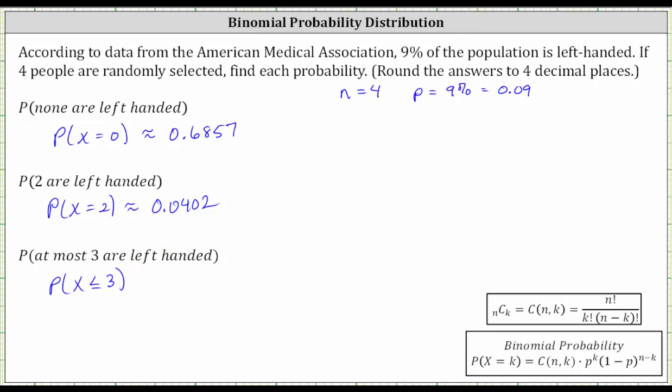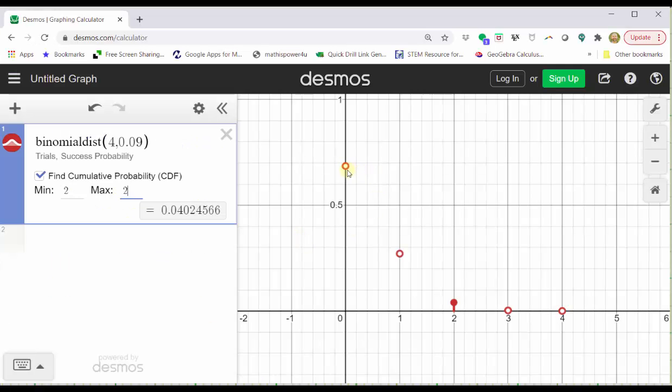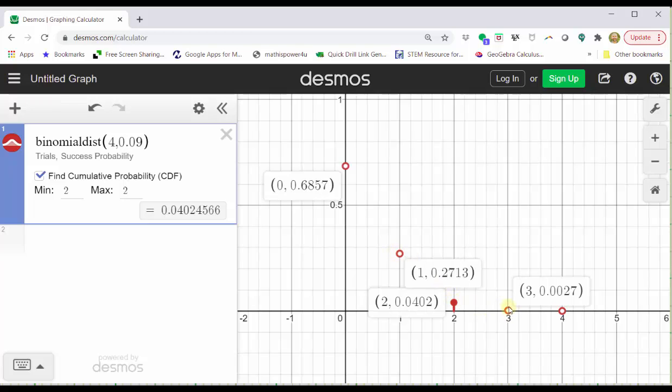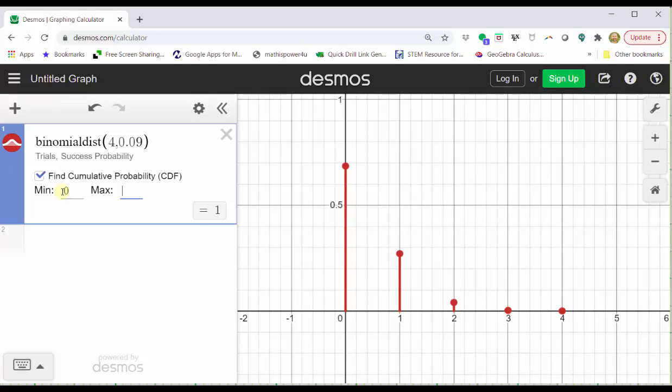Going back to Desmos, we could click on the points where X equals zero, one, two, and three, and then sum the probabilities, or we can simply go back to cell one, change the minimum value to zero, tab the maximum value to three, and the probability shows at the bottom of cell one.